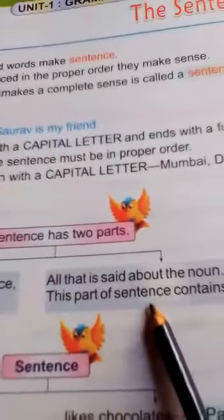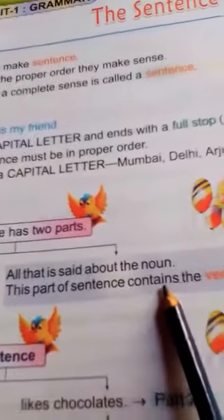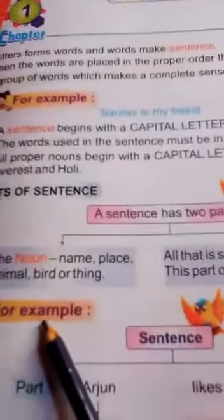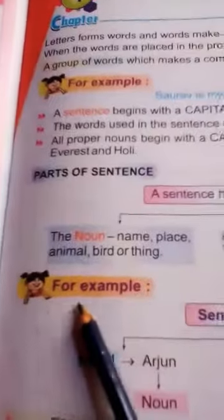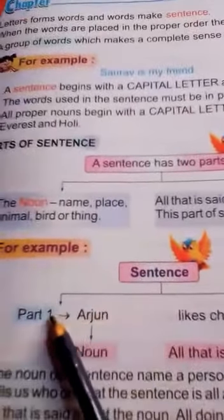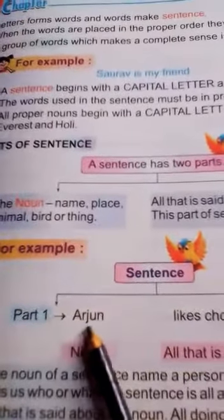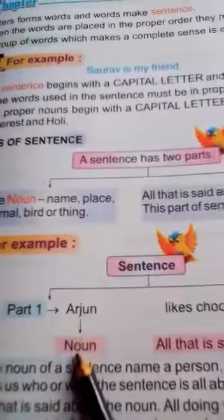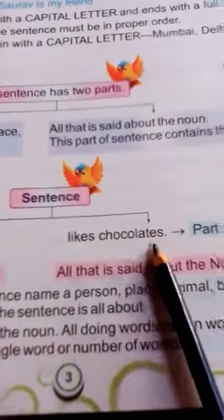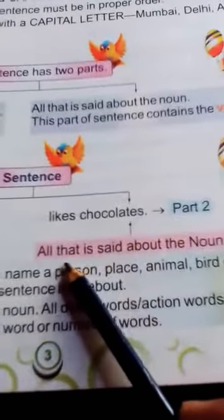Part 2: The verb — all that is said about the noun. For example, in the sentence 'Arjun likes chocolates': Part 1 is 'Arjun' (the noun), and Part 2 is 'likes chocolates' — all that is said about the noun.